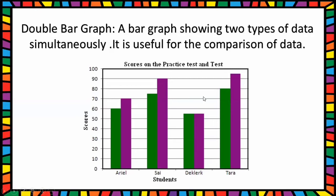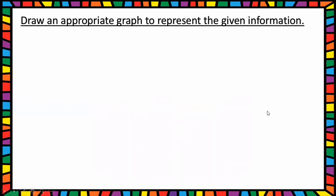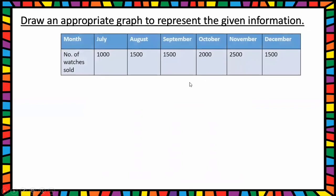Now we can do one question in the textbook. Draw an appropriate graph to represent the given information: Month and number of watches sold.